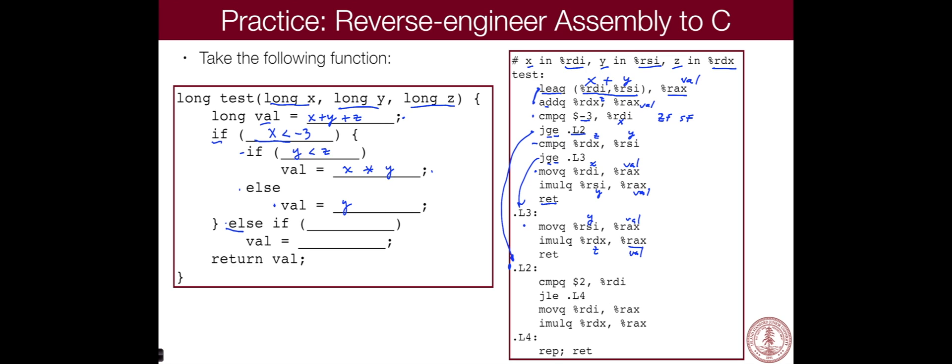Remember this is val, val times Z back into RAX. So this is going to be Y times Z. And then same thing, return, because it doesn't do any of the else part in this case.